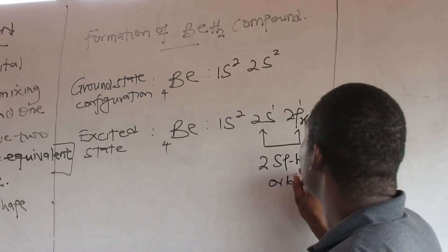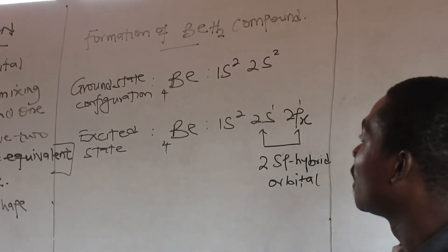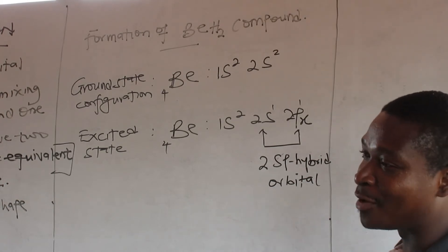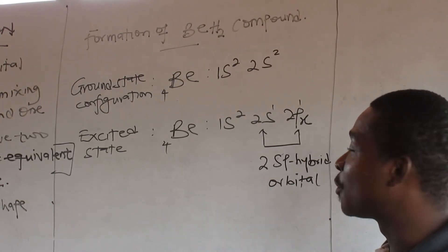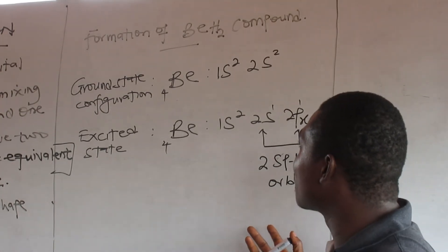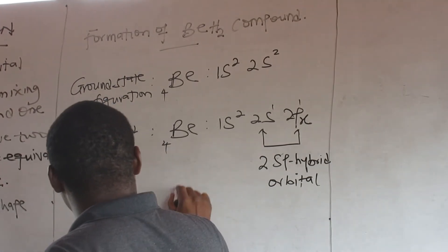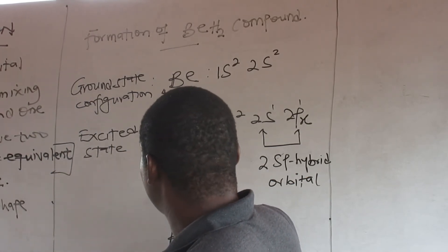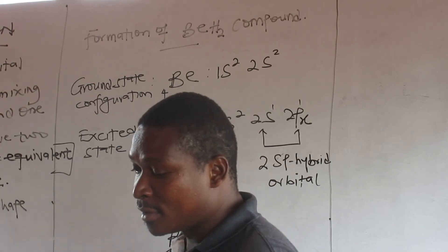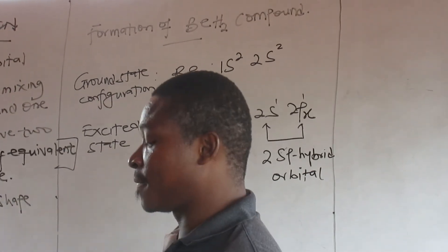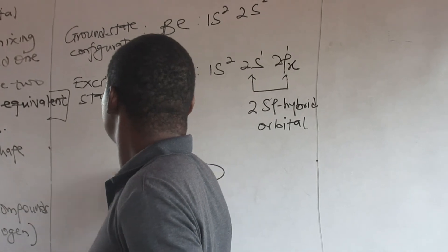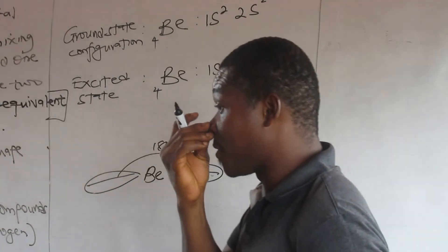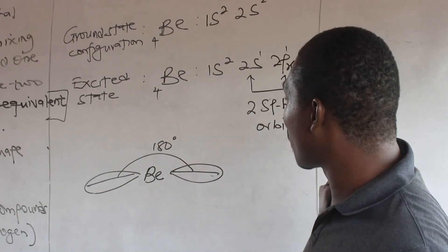We have two sp hybrid orbitals. If you are forming sp2 or sp3, it depends on the central atom — the central atom tells you what will happen. So the bond angle is 180 degrees — that is a linear shape. That's sp: the bond angle is 180 degrees, linear shape.